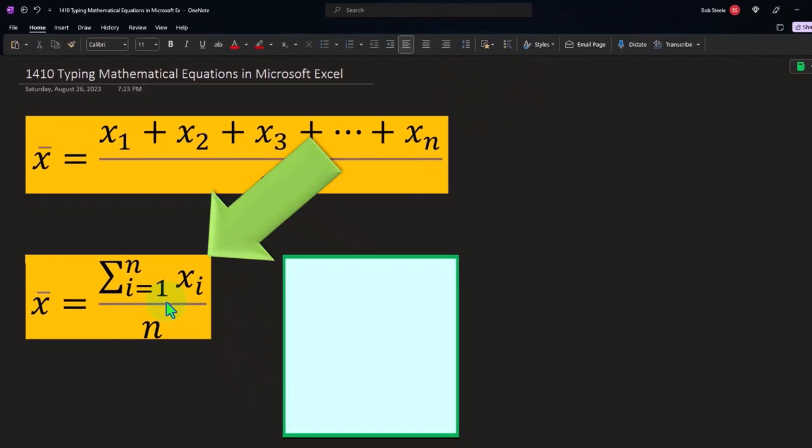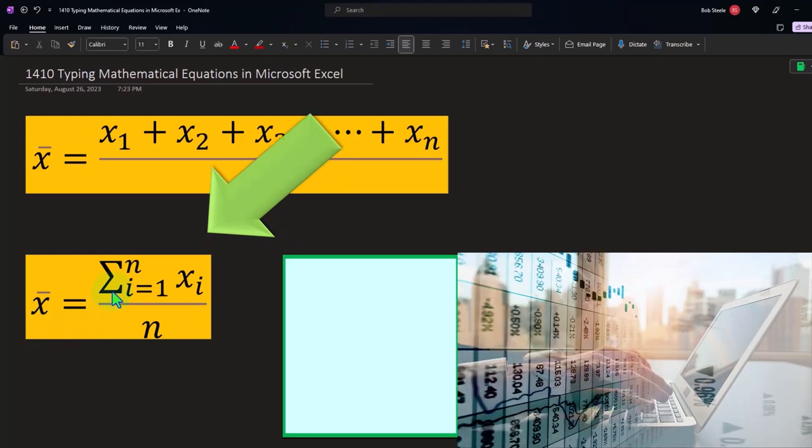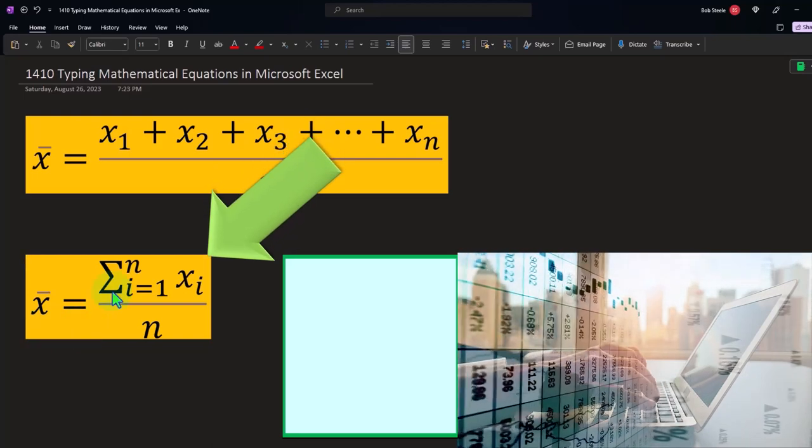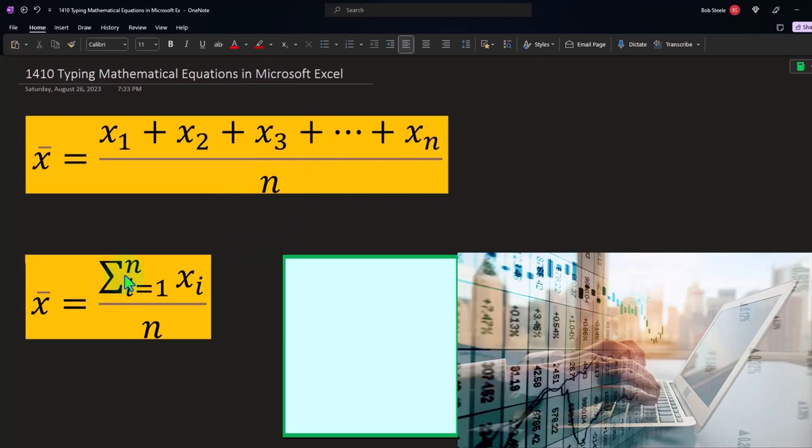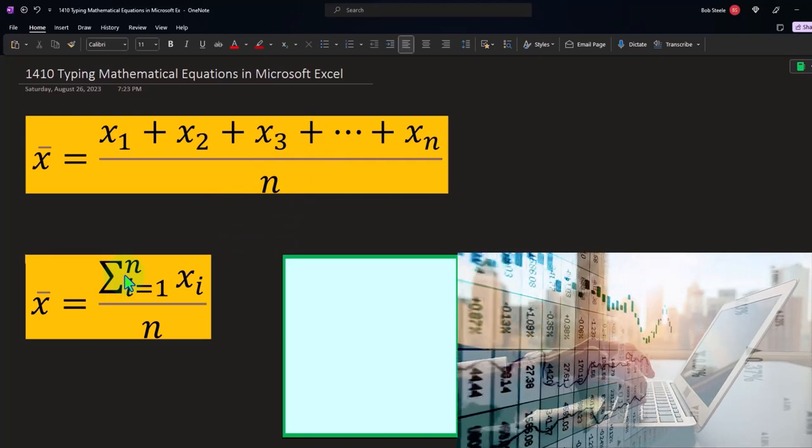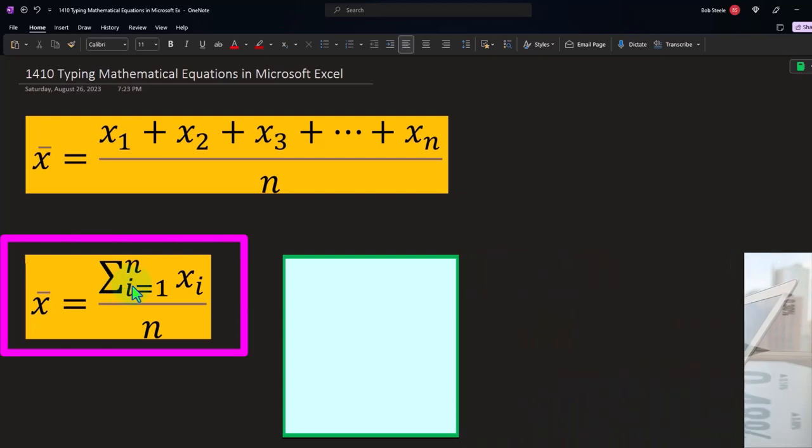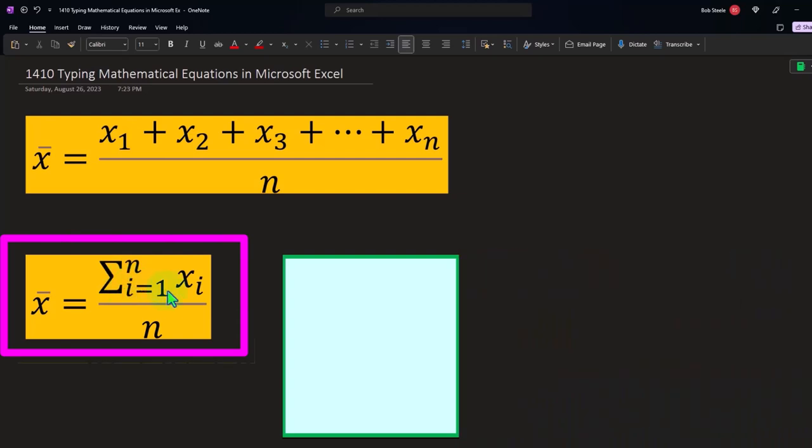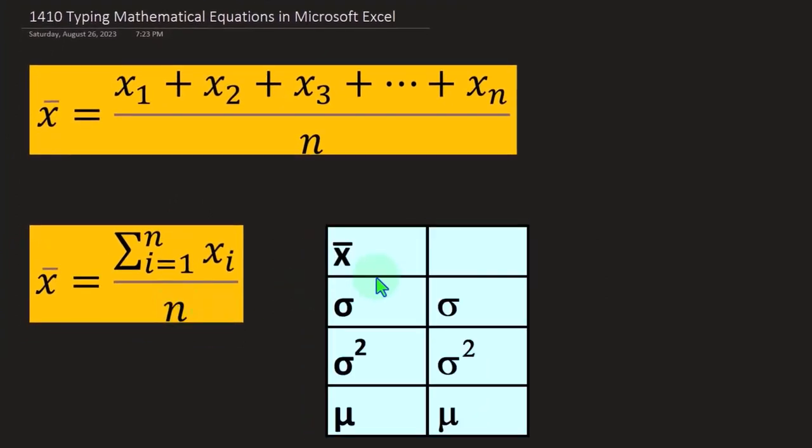We can also represent that this way. So x bar, or the mean, or the average equals, and now we've got this sum icon here, and we're going to say n is going to be representing the number of items that we're going to sum up the list of numbers, where we start with i equals 1, and then we go x of i. So we're summing up in the numerator again, just like we have up top, and then down below, we're going to be dividing by the number of items.